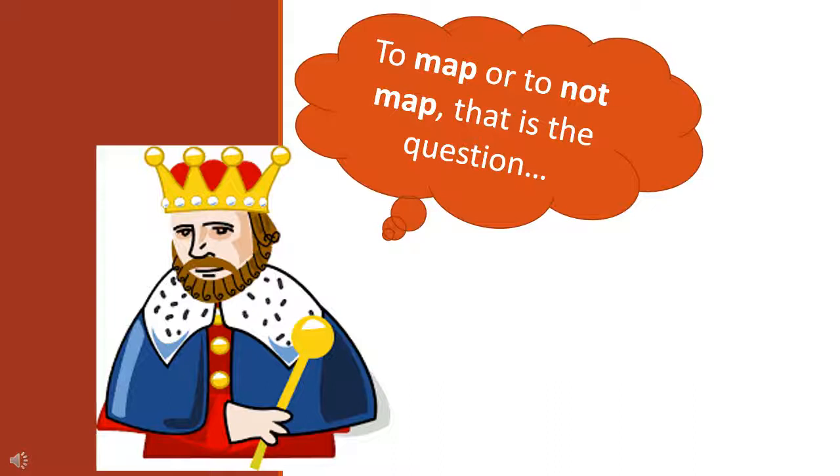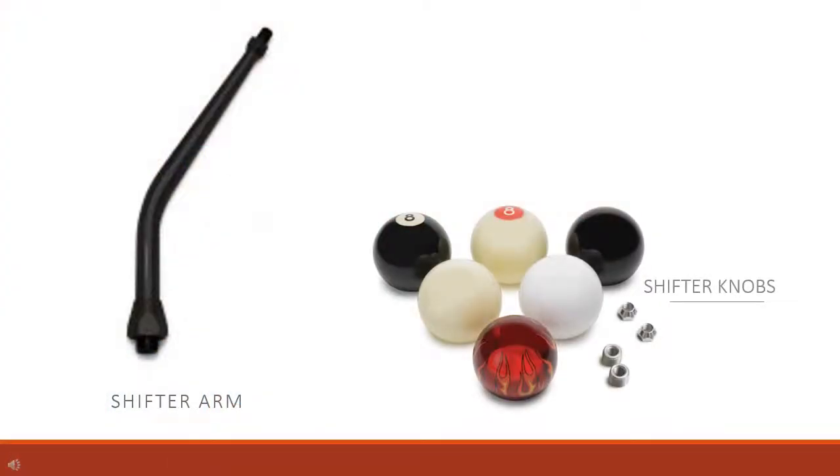As an example, let's look at shifter knob and shifter arm examples. So typically items like these would be considered universal fit. The only problem here is that it doesn't exactly apply to every vehicle. So these products wouldn't work for a column gear shift vehicle.